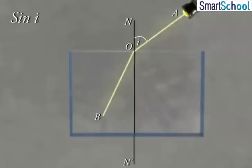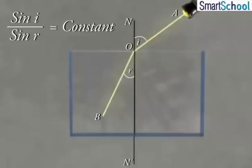In fact, the ratio of sine of the angle of incidence to the sine of the angle of refraction is a constant for the light of a given color and for the given pair of media.